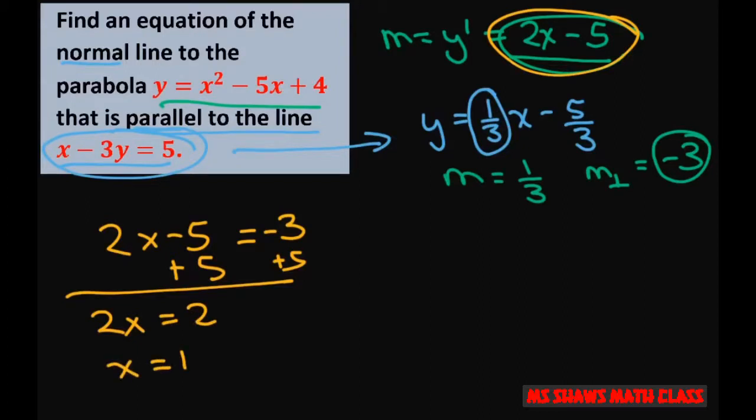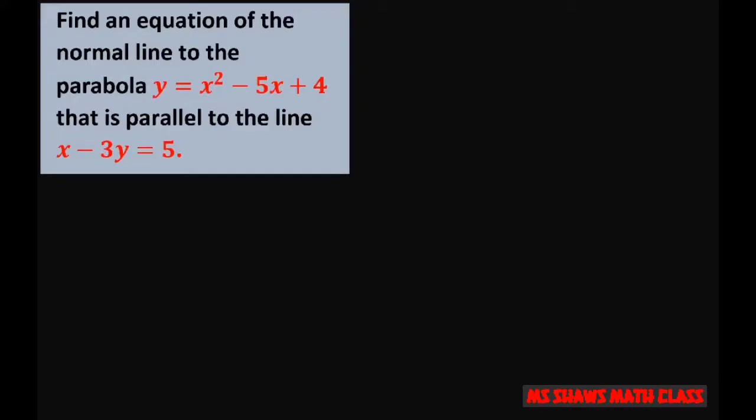Alright, so let's find out what we have to find in the equation. I'm going to plug in 1 into this equation, and that equals 0. So, now our point, therefore, is going to be 1 comma 0. That's where the normal line is going to be.